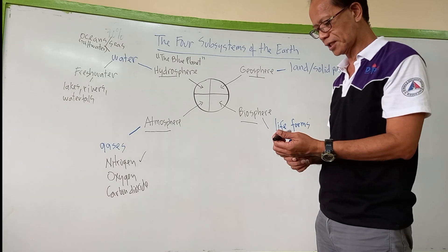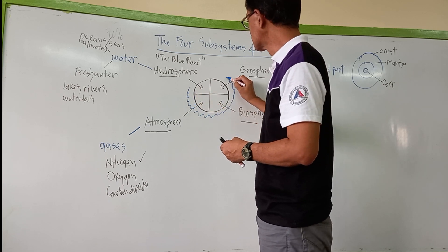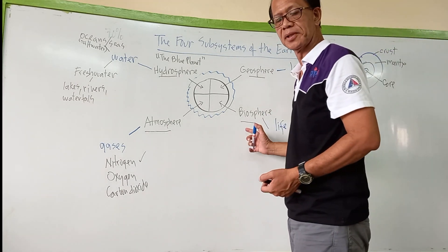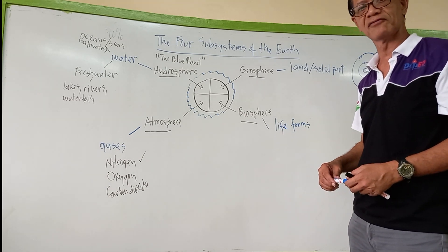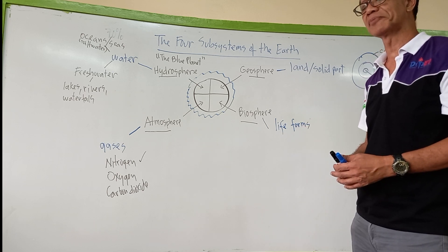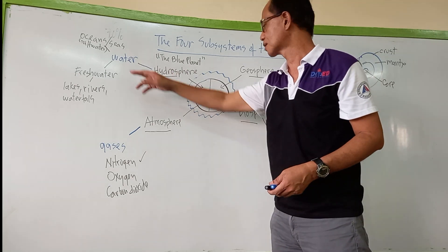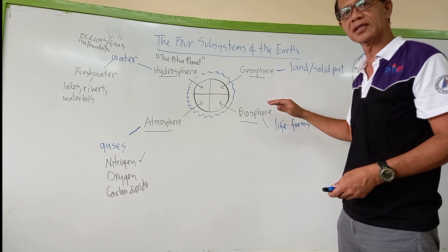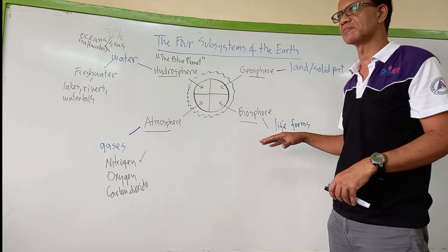So we can say that the atmosphere is the gases surrounding planet Earth. Now let's move to the biosphere. When we say biosphere, this is the part of our planet Earth that has life forms. Life forms are not only present in the solid part of the earth — they can also be found in water. In the geosphere we have forests and mountains where animals live.